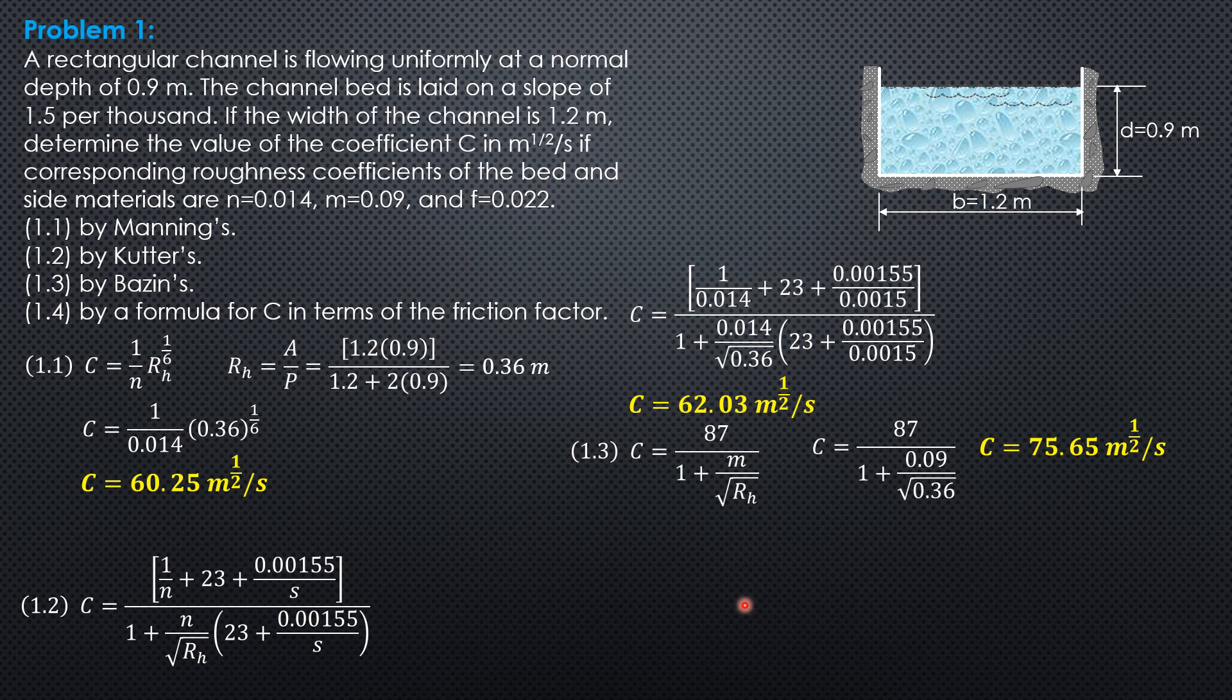And then by C square root of 8G over friction factor. So square root of 8 times 9.81 divided by 0.022. So C is 59.73 meter to the 1.2 per second.